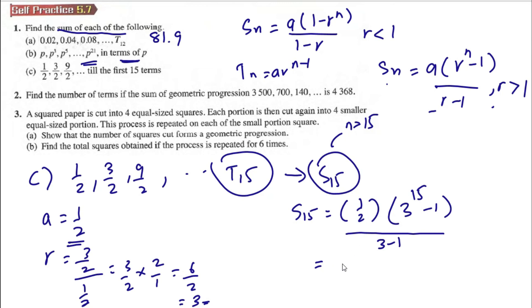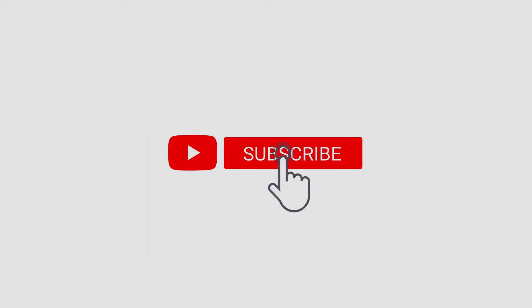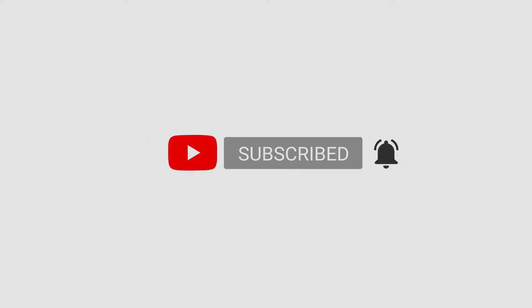Computing the result gives S15 = (1/2) × (3¹⁵ - 1) / 2, which equals approximately 7,174,453.5.